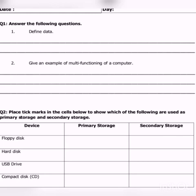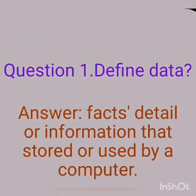Next, place tick marks in the cells below to show which of the following are used as primary storage and which are secondary storage. We need to tick the items that are primary storage and those that are secondary storage. The devices include hard disk, USB, drive, compact disk, and floppy disk. We will tick each one separately.